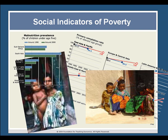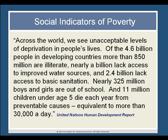In our discussion of how economists use per capita income as a measurement of extreme poverty, it's probably occurred to many of you that that's not the data we hear about in media reporting, or the data offered to us in pleas for support by charitable and non-governmental organizations. The United Nations Human Development website, for example, talks about more concrete measures of deprivation — usually known as the social indicators of poverty. Across the world, we see unacceptable levels of deprivation: more than 850 million are illiterate, nearly a billion lack access to improved water sources, 2.4 billion lack access to basic sanitation, nearly 325 million boys and girls are out of school, and 11 million children under age 5 die each year from preventable causes — equivalent to more than 30,000 a day.